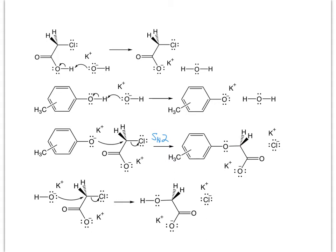There is also potential for competing reactions. The hydroxide ion could act as a nucleophile instead of the phenoxide ion, and we could get a hydroxyacetate as a product — an unwanted side reaction. One thing you always have to be aware of in organic chemistry is the potential for a side reaction, and this is a potential side reaction here.